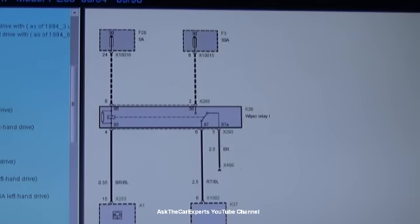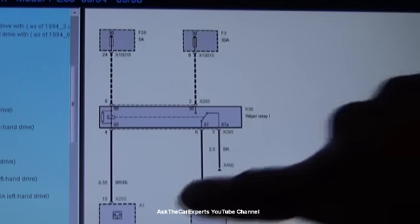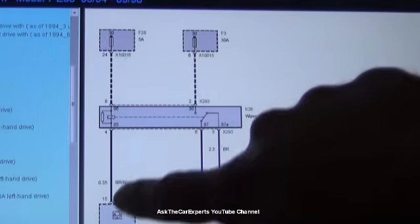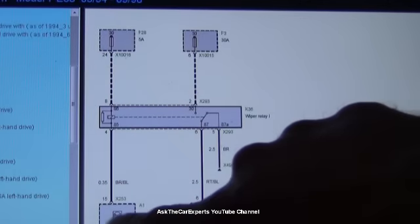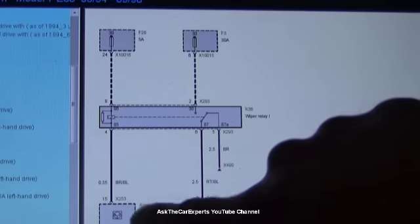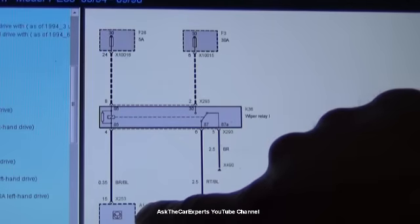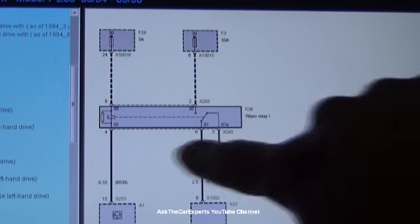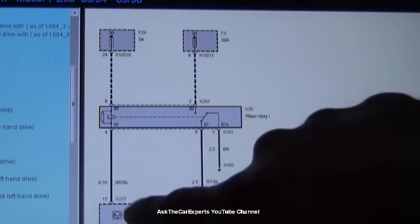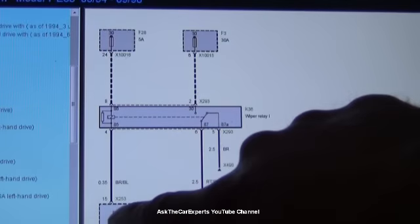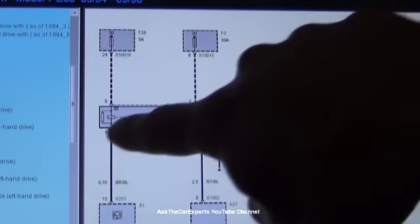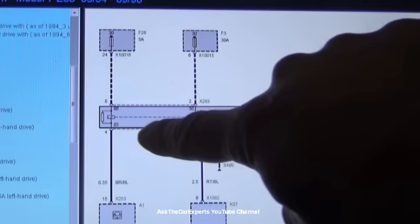A1 is actually the general module. So if you look, it's the general module that's going to be grounding this circuit. This is a little processor symbol right here. So that's going to be activating this wiper relay. So one thing you can check at the wiper relay or at the general module, are you getting this ground signal which is activating this relay. This is the working side of the relay right here.